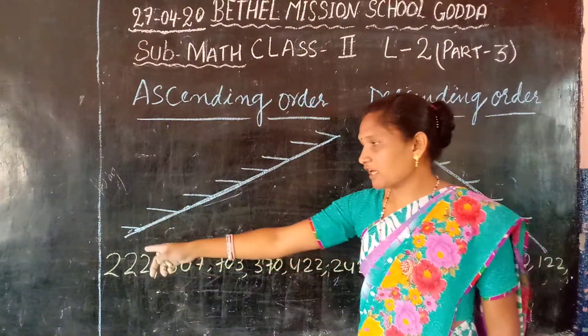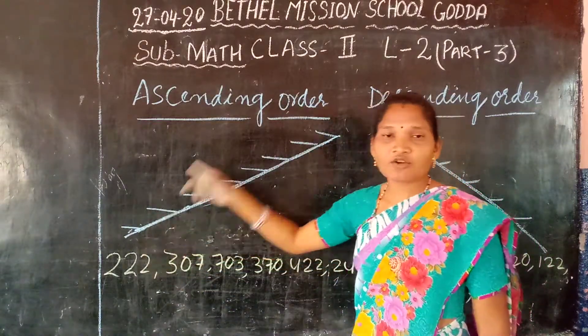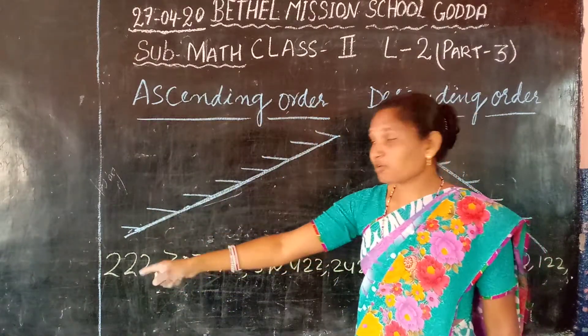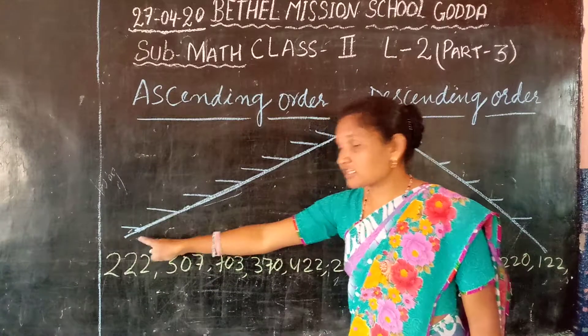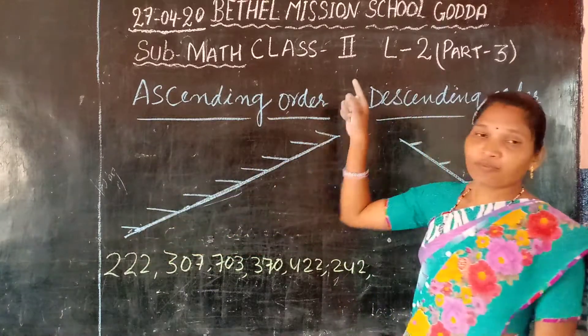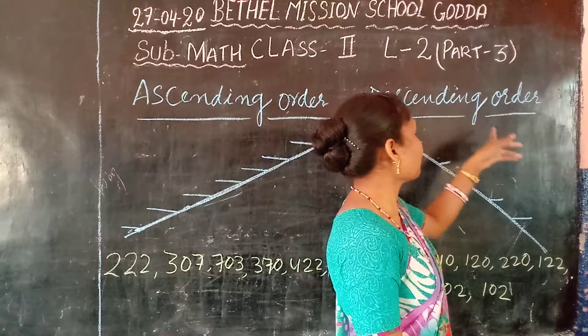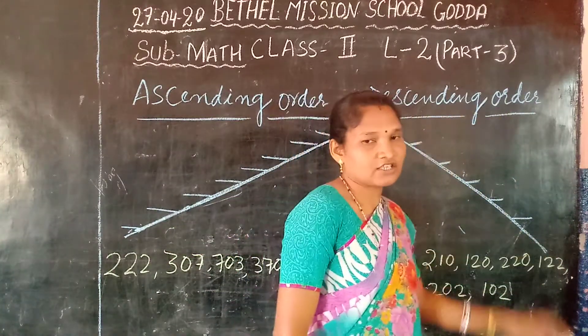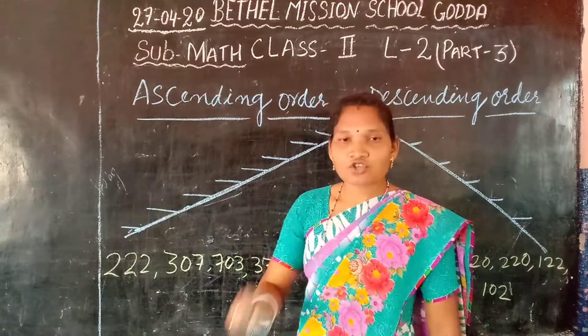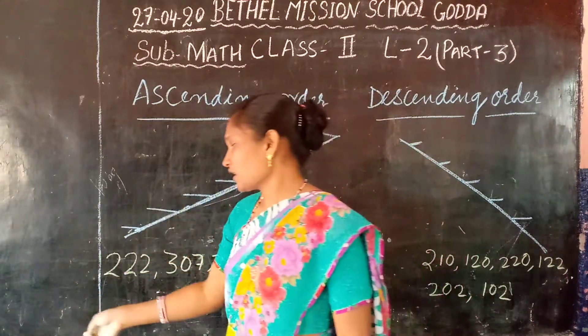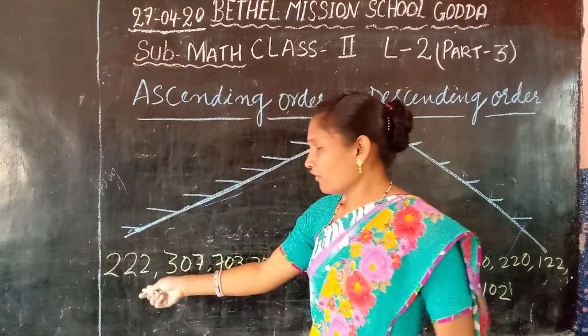Ascending order means, in Hindi, neche se upar — from bottom to top. And descending means upar se neche — from top to bottom. So ascending is from smaller number to bigger number.